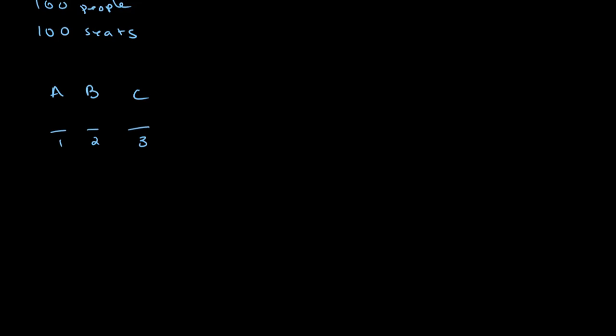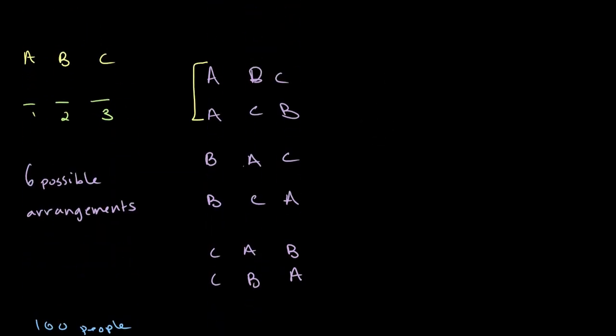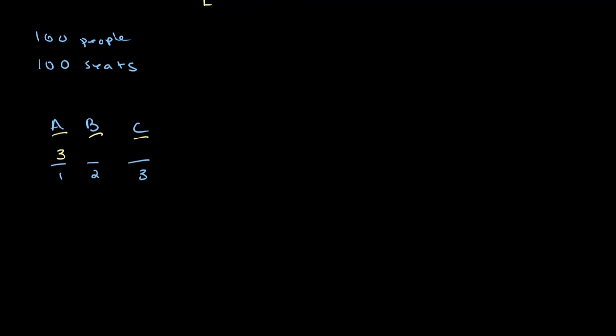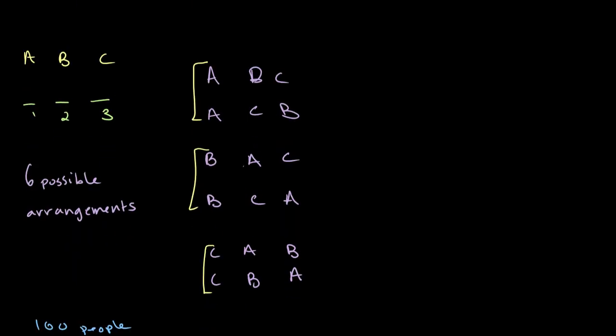When we're choosing who sits in seat one we have three options: we can choose A, B, or C. So for seat one we have three options, and as we can see here we have the option where person A sits, the option where person B sits, and the option where person C sits. For the second seat, we only have two possible people left. So if A is in seat one, then only either B or C can be in the second seat. When B is in the first seat, only A or C can sit in the second seat, and so on.